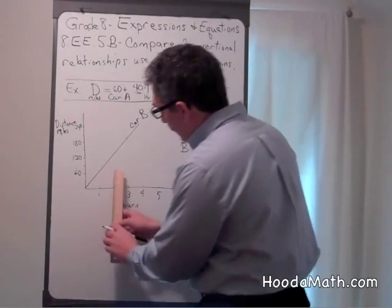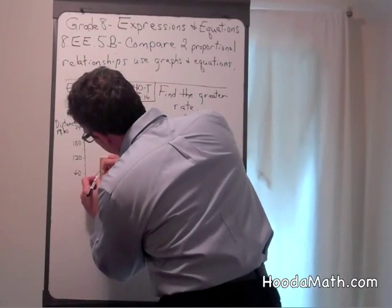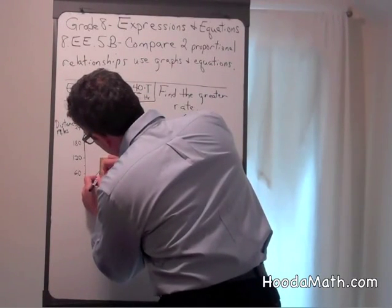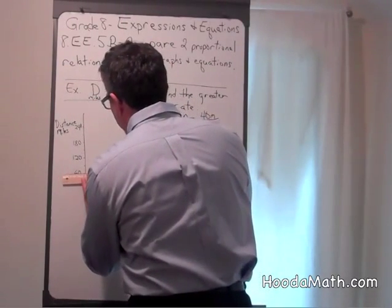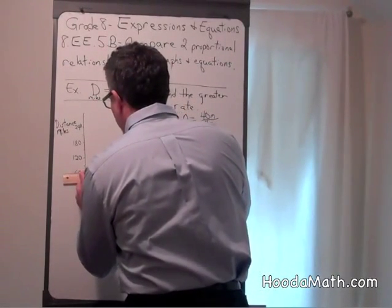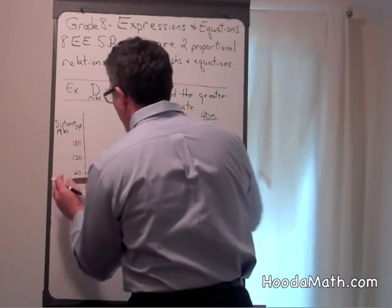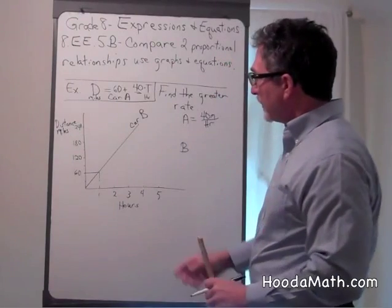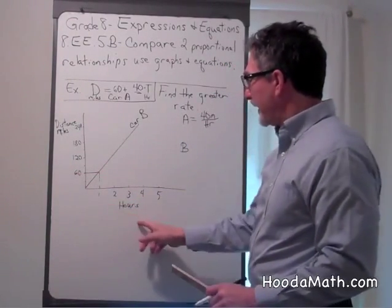So we go to one hour, draw a vertical line until it crosses our graph, and then go horizontally, and we find out that the distance covered was 60 miles in one hour.